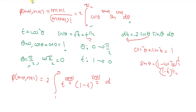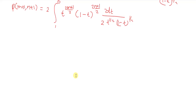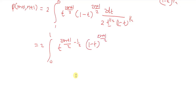We also have dt = −2cosθ sinθ dθ, so dθ = −dt / (2 cosθ sinθ). Cosθ = t^(1/2) and sinθ = (1−t)^(1/2). After substituting dt, the expression becomes: 2 times the integral from 0 to 1 of t^((2m+1)/2) times (1−t)^((2n+1)/2), multiplied by −dt divided by 2·t^(1/2)·(1−t)^(1/2). This gives a factor of t^(−1/2) and (1−t)^(−1/2) in the simplification.